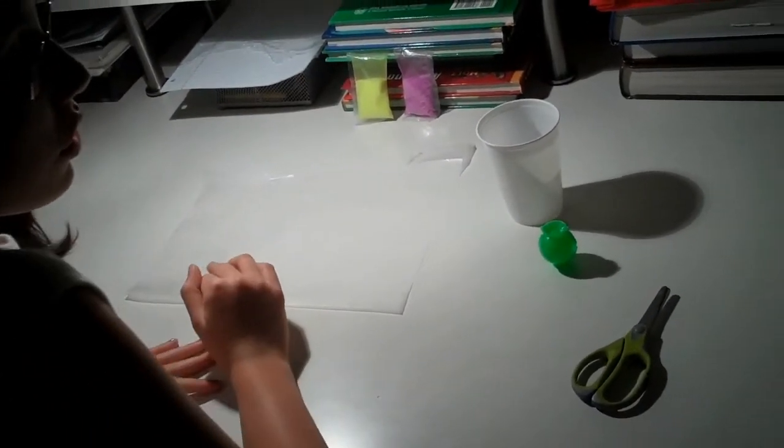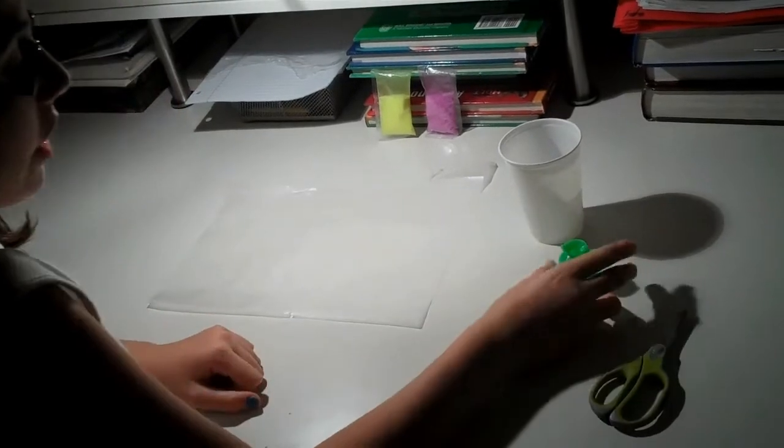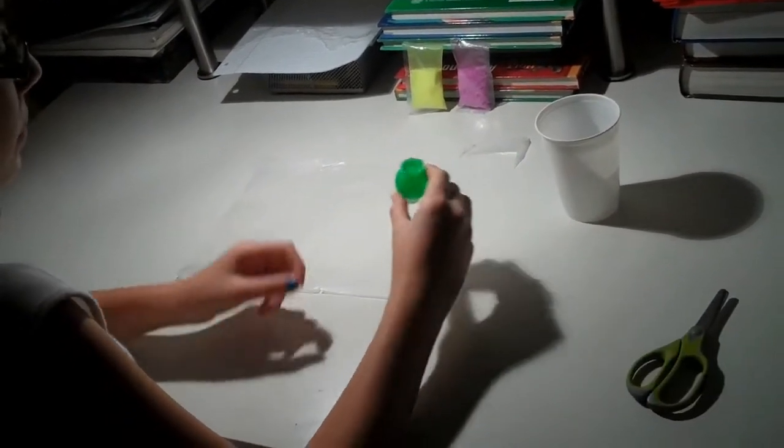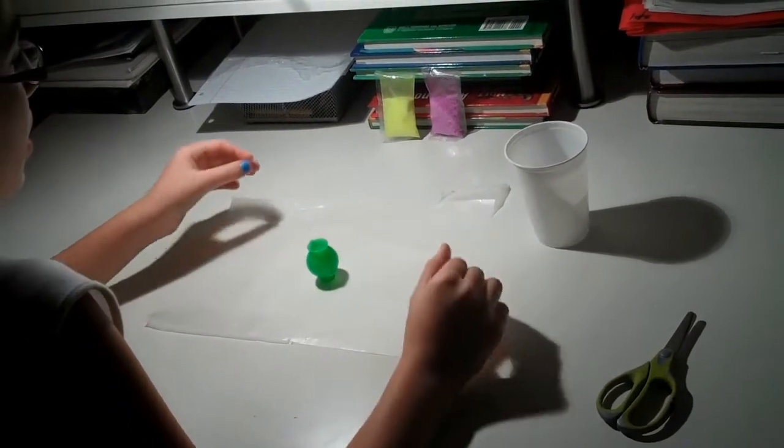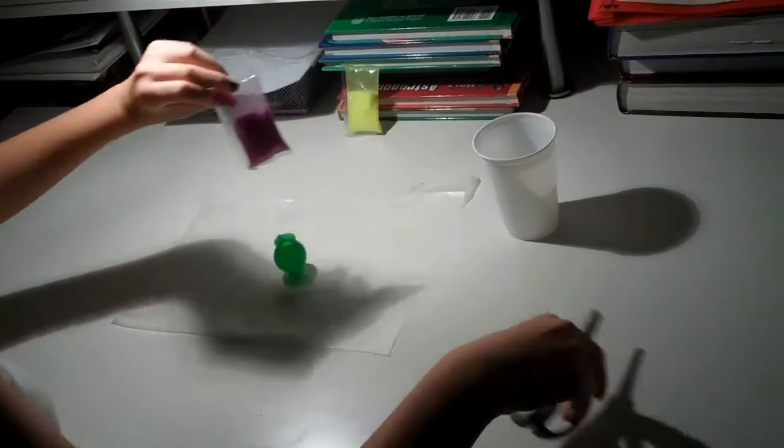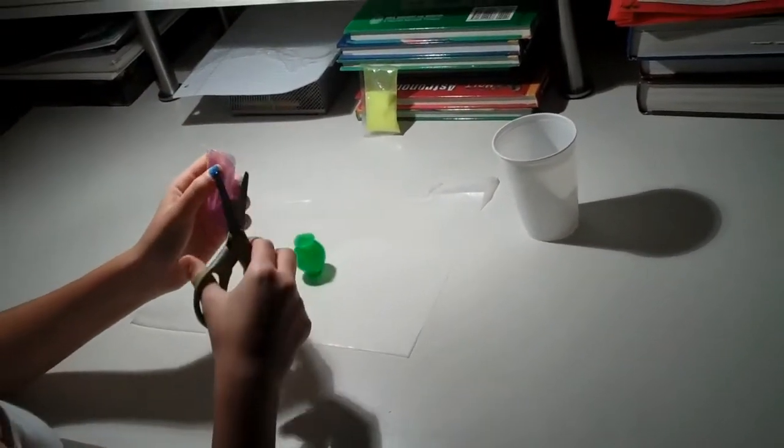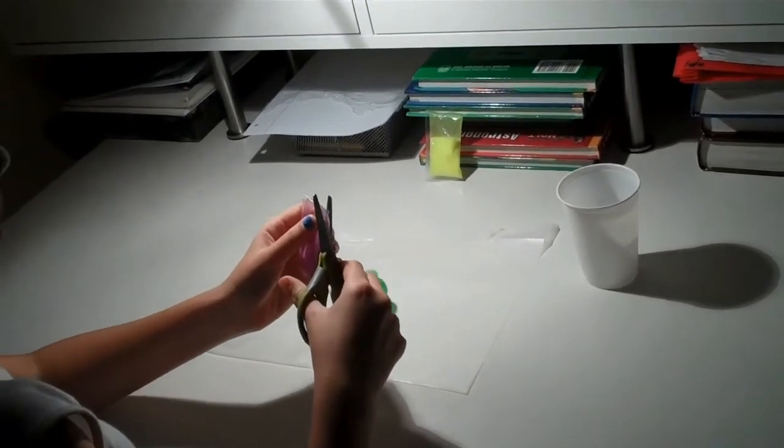So, the first step is you take your mold and you put it on your workspace. I'm going to open the colors, and you're going to pour in how much you want of each one.